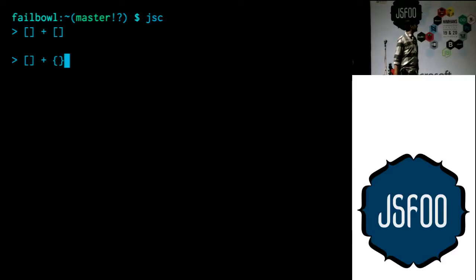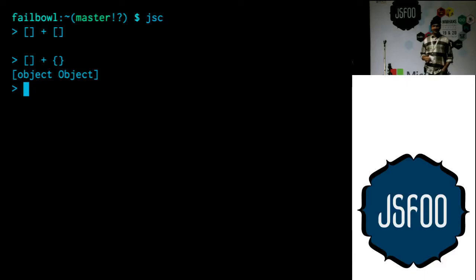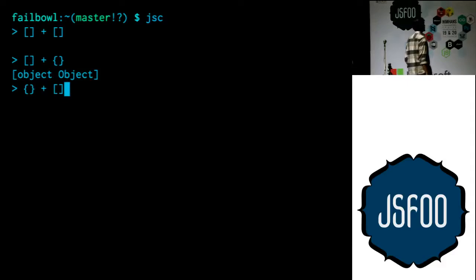Now, what would array plus object be? This should obviously be a type error because those are completely disparate types. Does anyone know what this is? It's object. Now, because this is a plus operation, you can flip the operands and the same thing comes out.